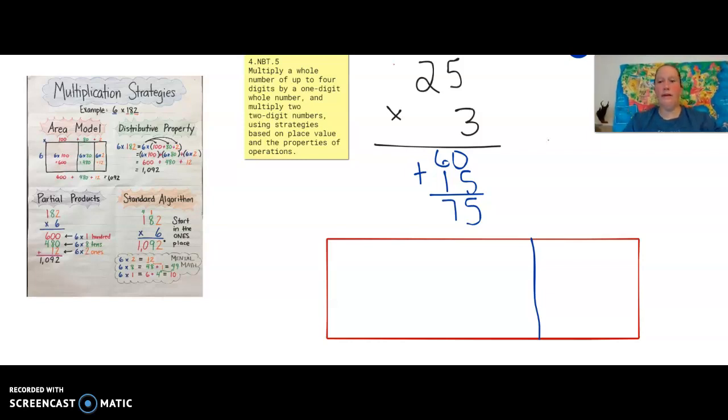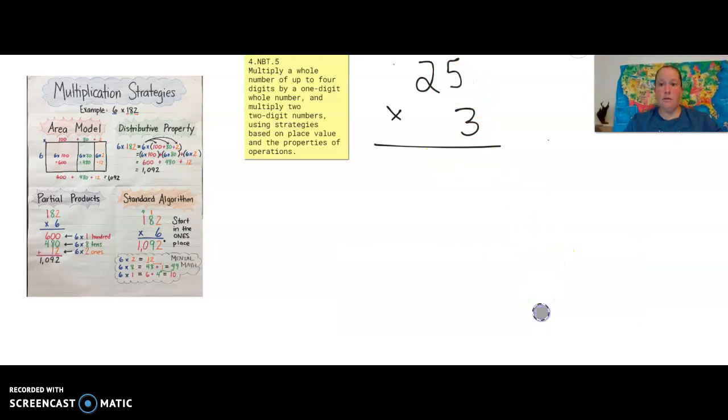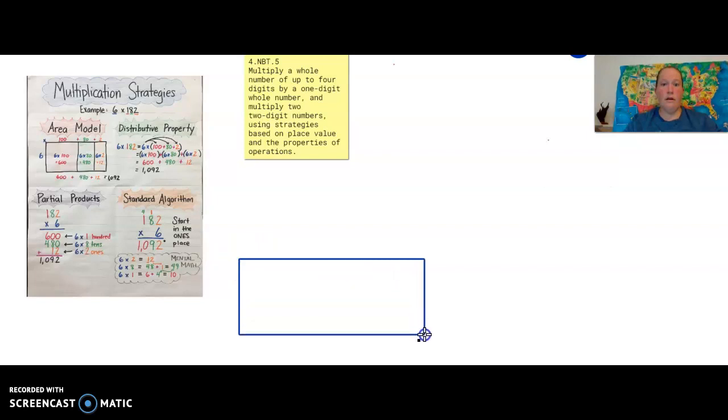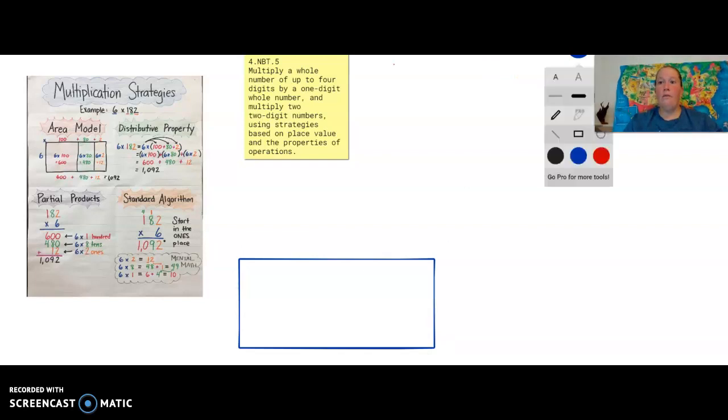So now, the reason I wanted to do the 25 times 3 is I want to show you how when we add a zero to our 3, and we do a two digit by two digit, all we're doing is making the answer ten times bigger. So let me show you. We're going to make a new box and everything, because I want to bring this over. So we're going to make our rectangle over here. And then we will put our equation on the side. It'll be easier for us to do our partial products. So we got 25, and I said I wanted to add, make it ten times bigger, so we're going to do 25 times 30.